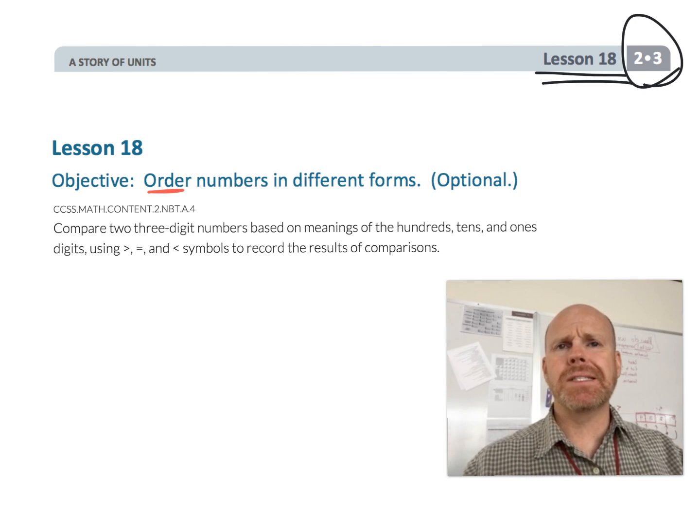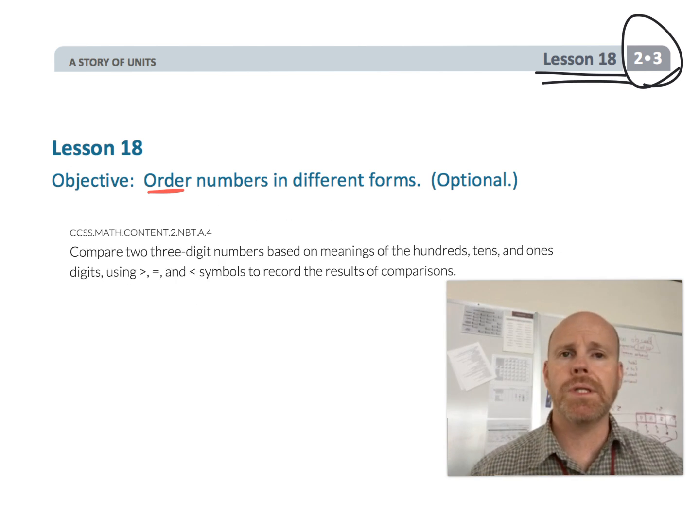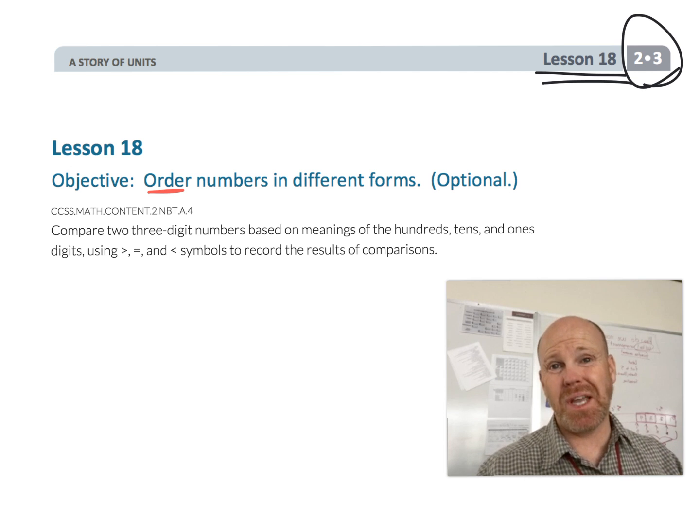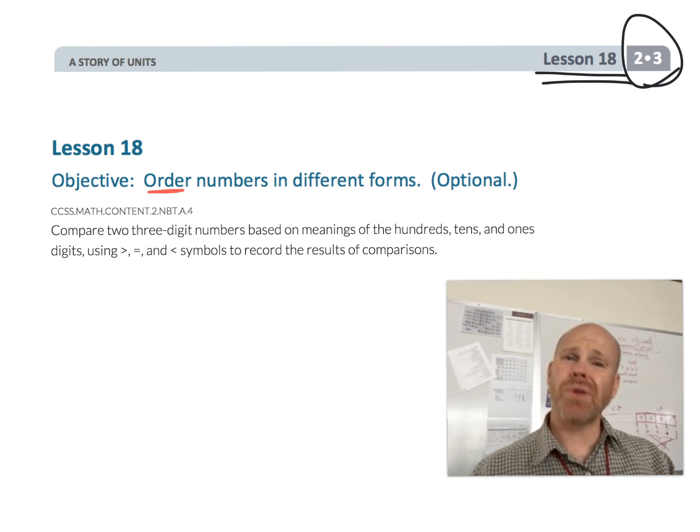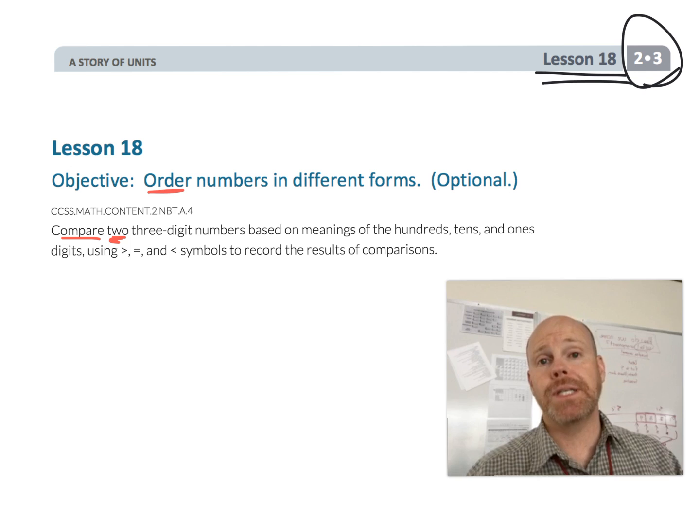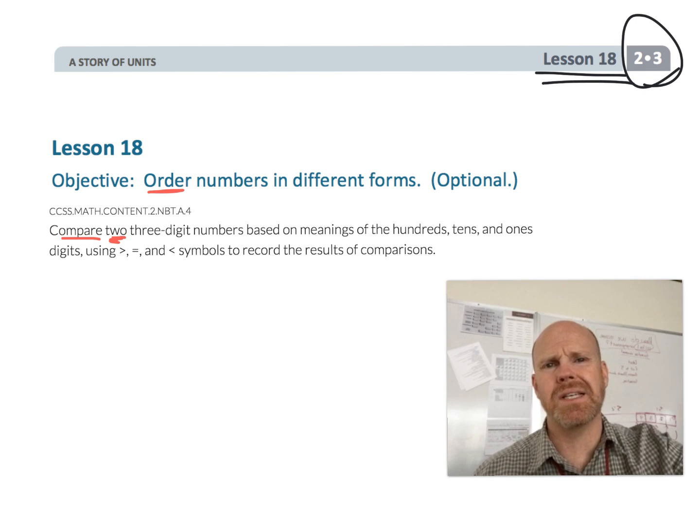Now the important thing about this lesson is it is optional. Why is it optional? Well, it's optional because we're going to be comparing three numbers and arranging them from least to greatest or greatest to least, but the standards say for second graders they're only supposed to be comparing two three-digit numbers, not three three-digit numbers, and that's what makes this lesson optional.